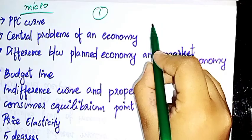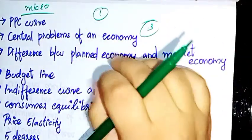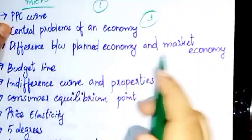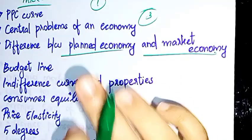Then, the central problem of economy. We have three problems: what to produce, how to produce, and for whom to produce. That is the difference between planned economy and market economy.